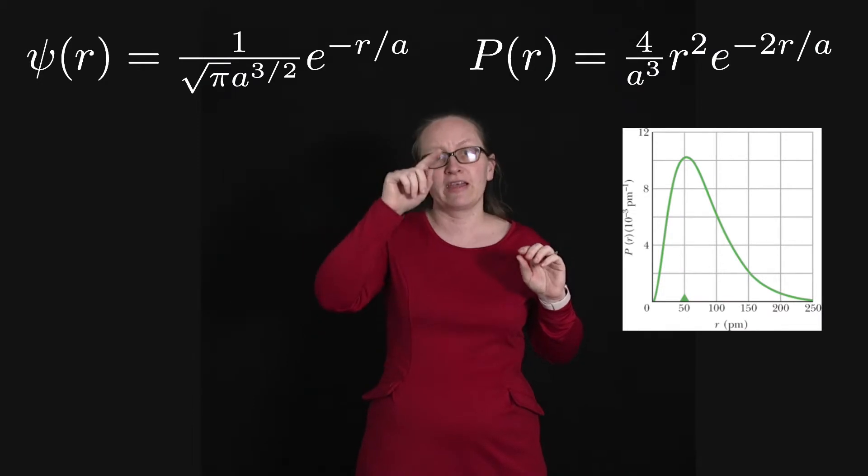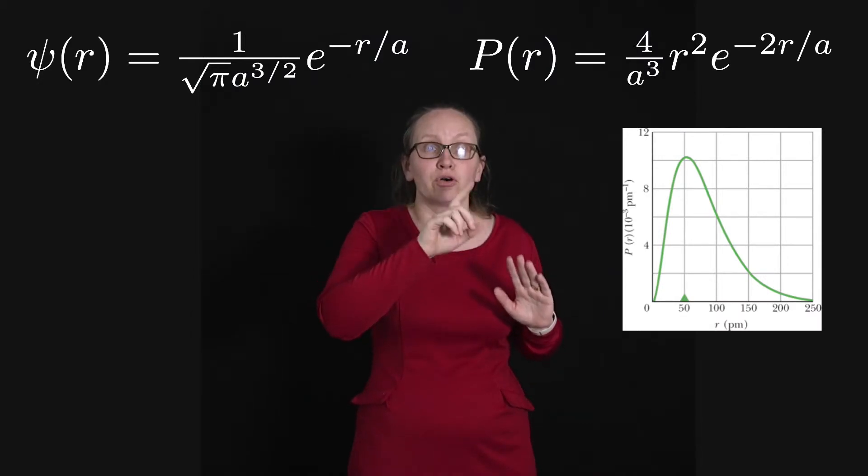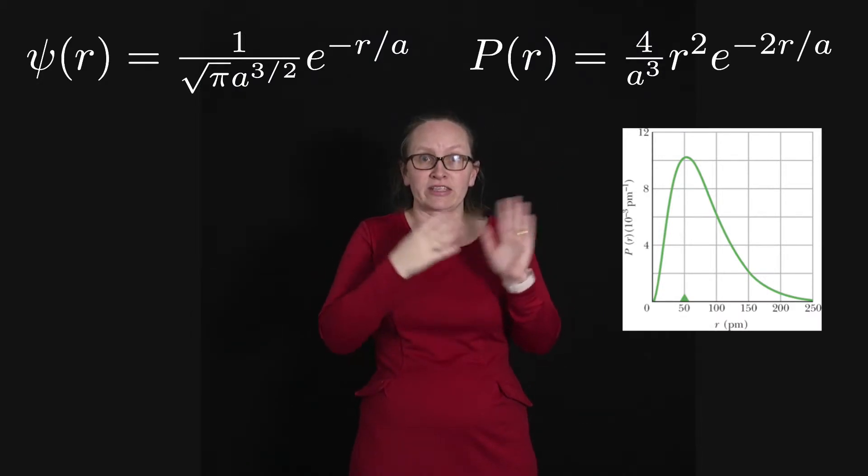So at the peak of the graph, that's the most probable radius for the electrons to be found at. So roughly a Bohr radius. Most of the electrons are located there.